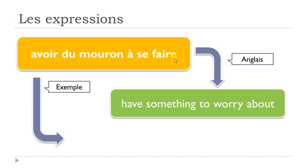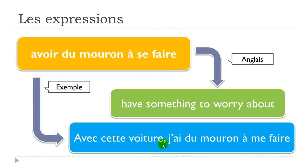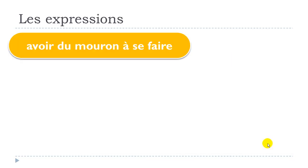Let's see one example: avec cette voiture, j'ai du mouron à me faire. If you look carefully, the expression uses SE, but in my example SE has been changed to ME because we have the first person JE. So you will have to modify this part before your verb according to the subject.